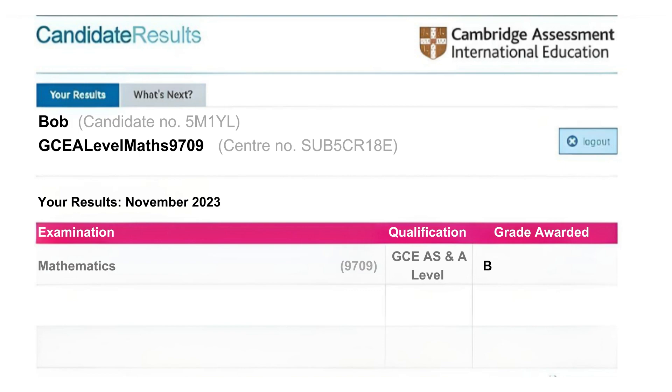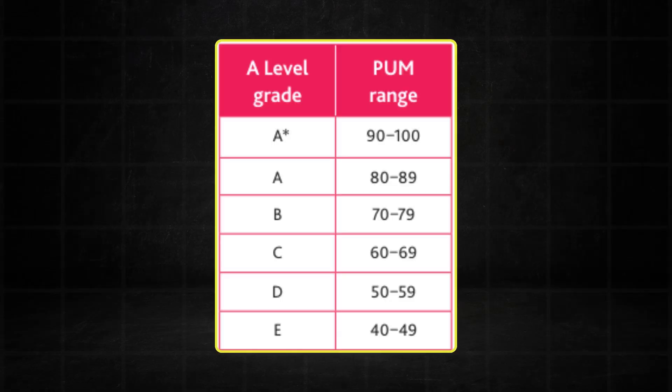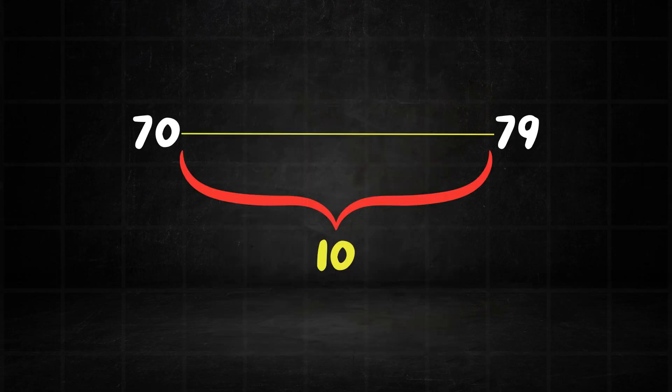Now let's calculate his percentage uniform mark. This is where it gets a bit tricky, so pay close attention. According to Cambridge's grading system, a B lies between 70% and 79%. So if we were to consider this 70% to 79% as a class, that's a class width of 10%.